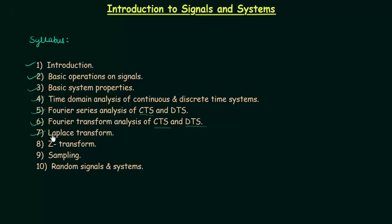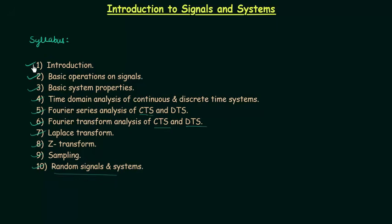The sixth part is the Fourier transform analysis of continuous time signals and discrete time signals. The seventh part is the Laplace transform, the eighth part is the Z-transform, the ninth part is the sampling theorem, and the last part is random signals and systems. We will try to complete this syllabus in the coming presentations.